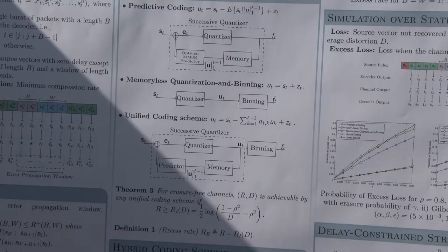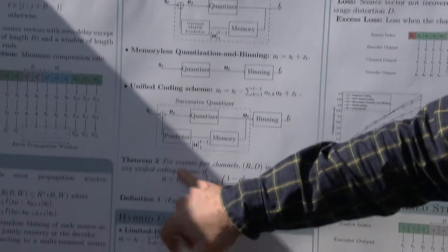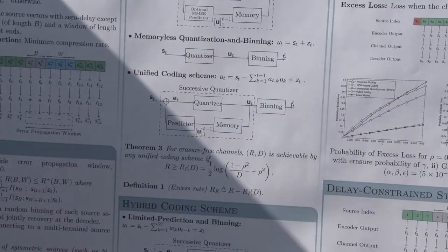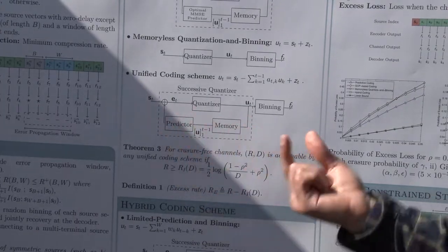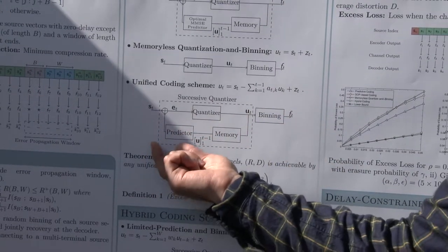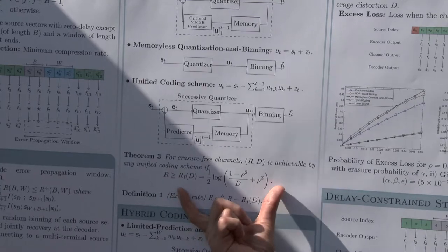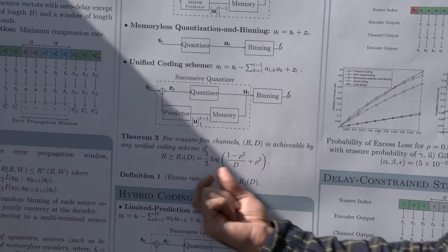The first result that we can show is that for the case that the channel doesn't introduce any erasure, for erasure-free channels, no matter how you choose your predictor, the binning will compensate the effect of that and the overall rate distortion function will be independent of the choice of this predictor.